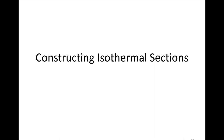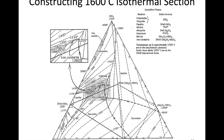One thing that is quite useful is the construction of an isothermal section. All these lines represent the temperature contours of the liquidus, and so we have this projection of that three-dimensional shape onto a two-dimensional space. But if you're looking at a system, you may only be interested at a particular temperature, and just want that one slice of the diagram for an easier view of what's happening at that temperature for a given composition.